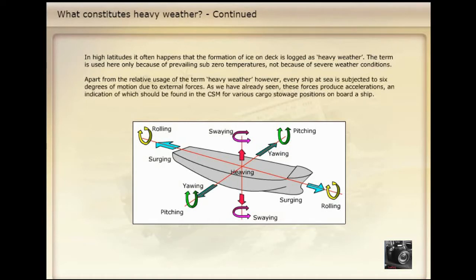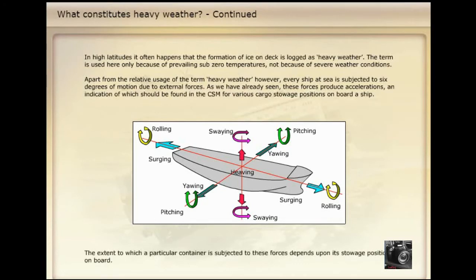Apart from the relative usage of the term heavy weather, each ship at sea is subjected to six degrees of motion due to external forces. These forces produce accelerations, an indication of which should be found in the CSM for various cargo stowage positions on board a ship. The extent to which a particular container is subjected to these forces depends upon its stowage position on board.